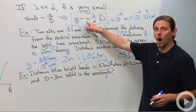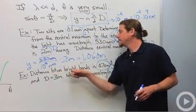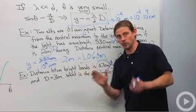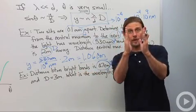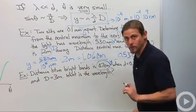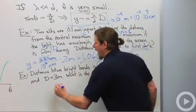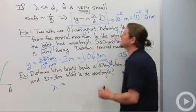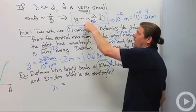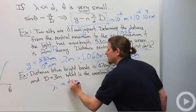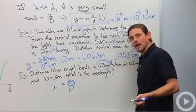We're going to use, again, n equals 1 because we're looking at bright bands that are right next to each other. So that means that we went from one of them to the next, n equals 1. So we'll say lambda is equal to d times y over capital D. Just like that.